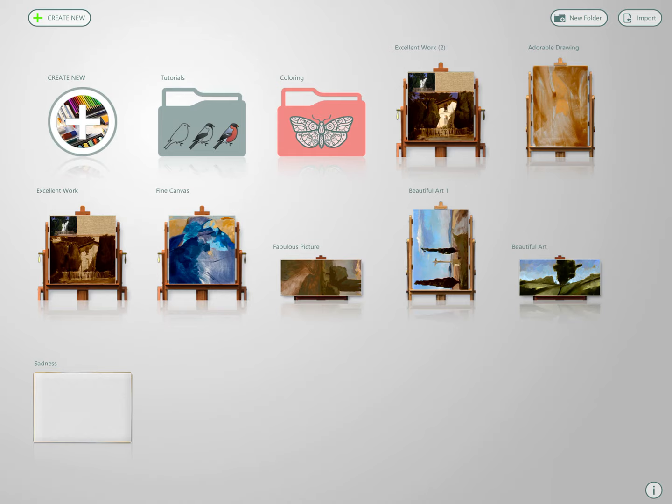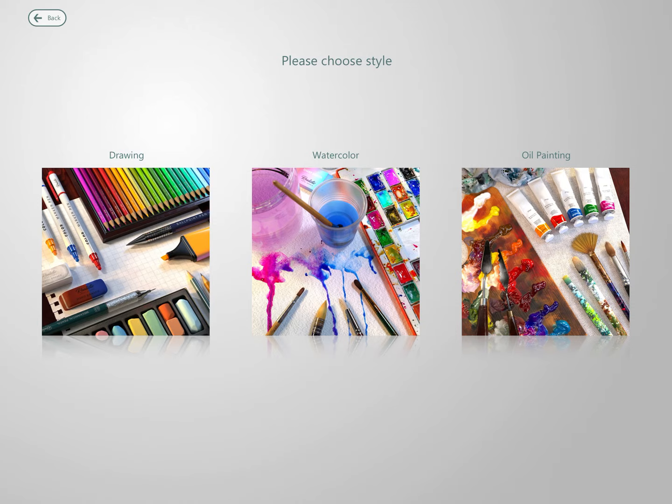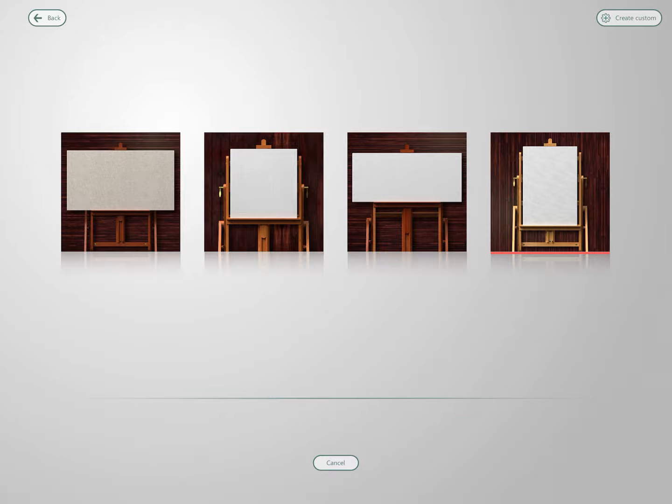You start off with a bunch of canvases — obviously create new, we're going to do oil painting. You're limited to certain canvas sizes, but don't think you can't crop it later or use a dividing line somehow, so they're not as restrictive as they look.